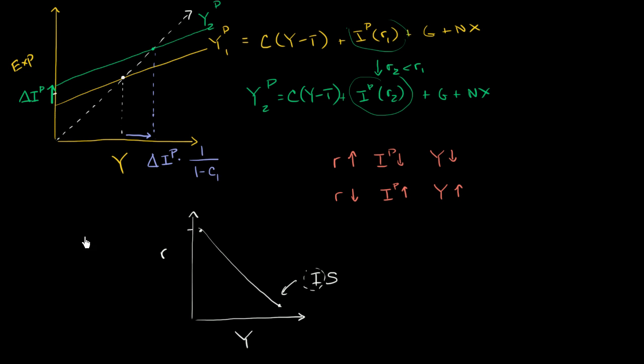In the last video, we began to explore the IS curve, which stands for investment savings. And we analyzed it from the point of view of investment. We thought of it as real interest rates driving the level of investment, which drives the equilibrium level of real output.